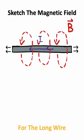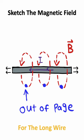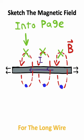Notice how beneath the wire, the magnetic field comes out of the page, and above the wire, the magnetic field goes into the page.